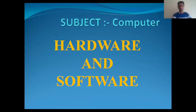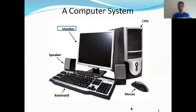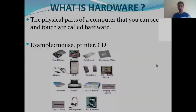Hello everyone, I'm your computer teacher Aniket Kurve and today we are discussing about hardware and software of computers. In a computer system there is a CPU, which is the central processing unit. Mouse is an input device. Keyboard is also an input device. Speaker is used to listen to music and audio, so the speaker is an output device. Monitor shows the results and is also an output device.